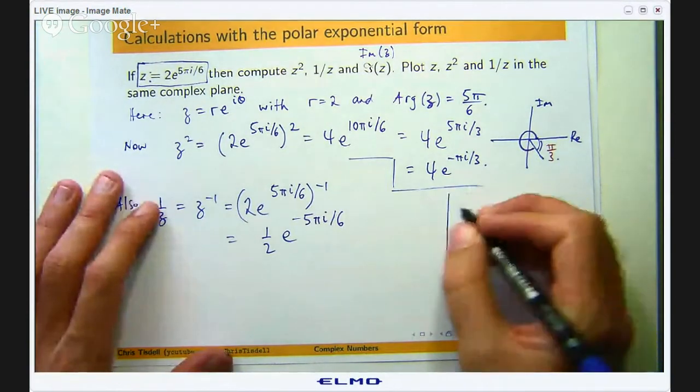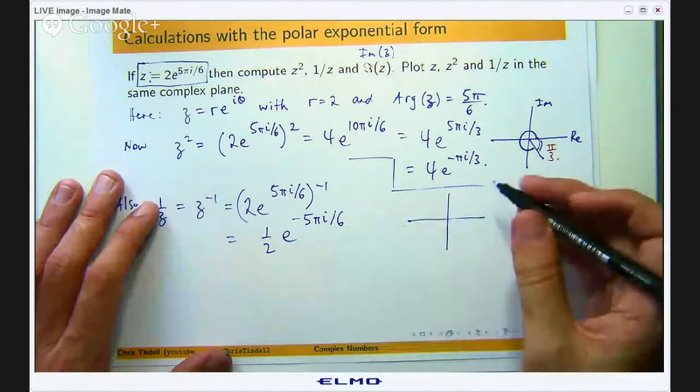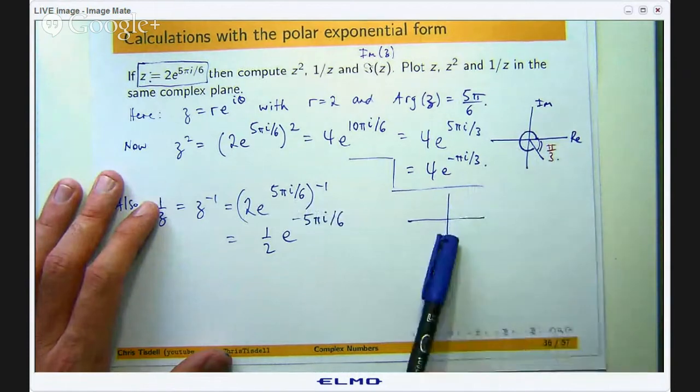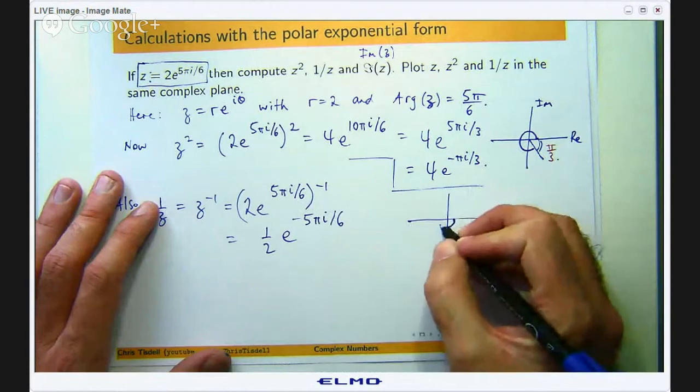And if I draw a quick little sketch we are going to start here and rotate because it is negative rotate in the clockwise direction 5π/6 units. So I am going to go sort of around to about here.